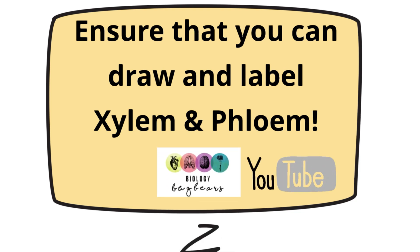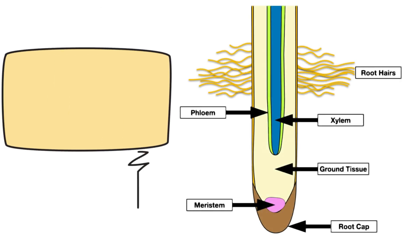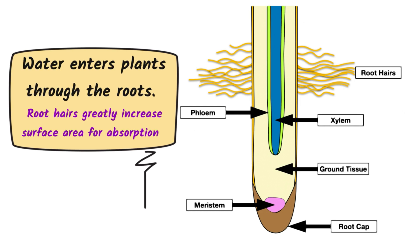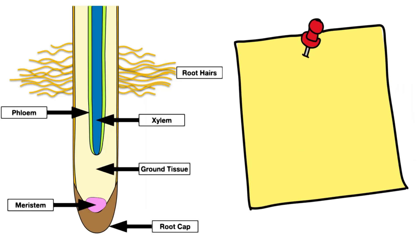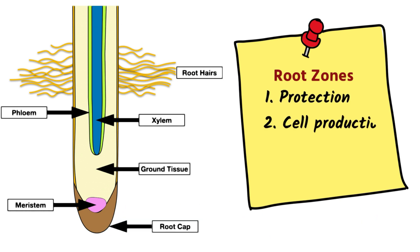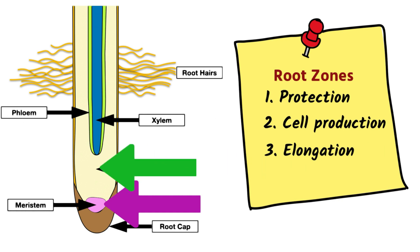Learn all the plant structure diagrams — they're very important for the exams. The root is another important example. Water enters the plant through the root, and root hairs greatly increase the surface area for absorption of water. There are also root zones which are often asked to be marked on diagrams. First is the zone of protection — look for the root cap. Second is the zone of cell production — look for the meristem. Then the zone of cell elongation just above it, and finally the zone of differentiation — look for the root hairs.